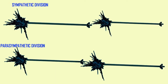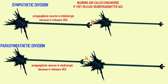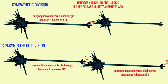A neuron is referred to as cholinergic if it produces the neurotransmitter acetylcholine. In the sympathetic division, the pre-ganglionic neurons are cholinergic — they release acetylcholine. In the parasympathetic division, the pre-ganglionic neurons are cholinergic and release acetylcholine, and the post-ganglionic neuron is also cholinergic because it releases acetylcholine.